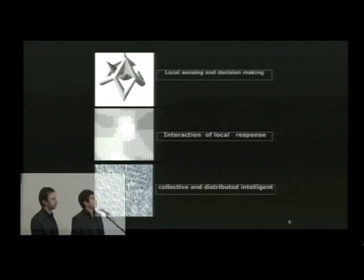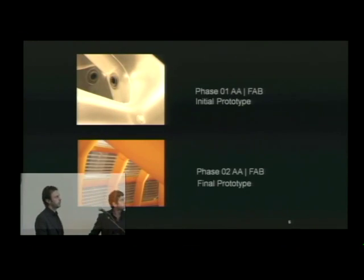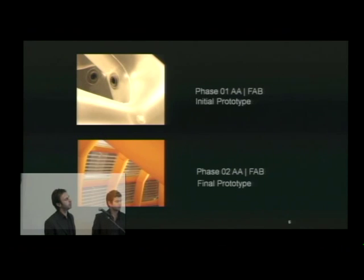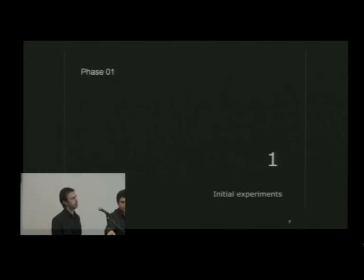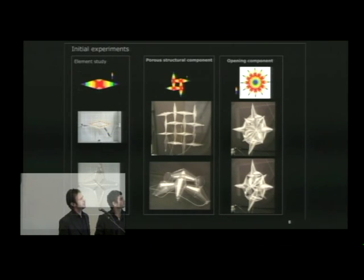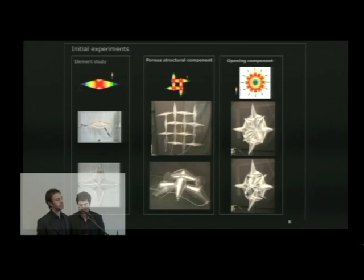We plan to introduce adaptable openings to potentially increase the quality of spaces created by this material system. In our system, all sensing and decision-making happens locally, and from the interaction of these local responsive elements, collective and distributed intelligence takes place. In this presentation, we'll take you through the designing and fabrication process we did in two stages of the Fab competition. The first stage was our initial prototype, and in the second we made the final prototype, which you can see in the exhibition.